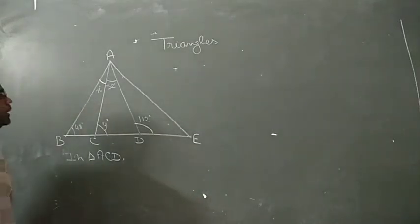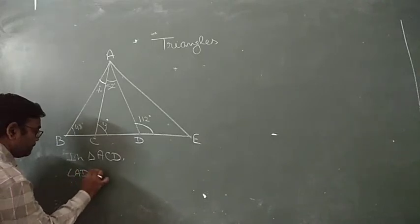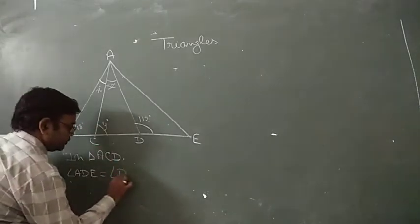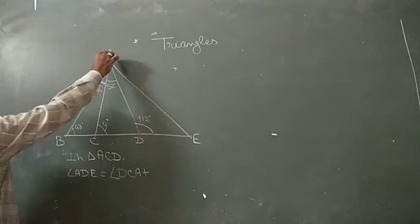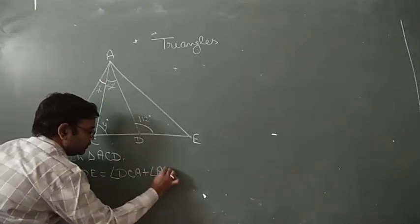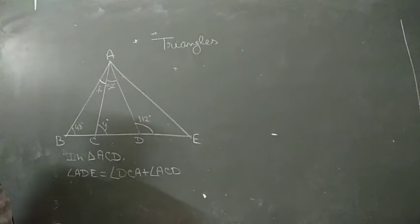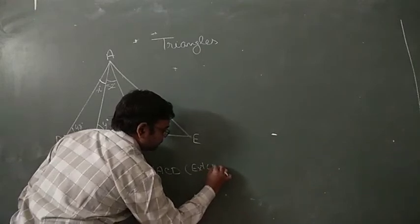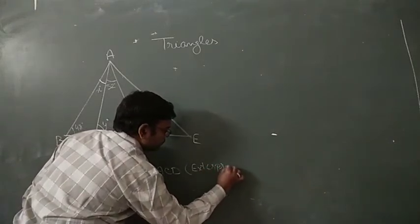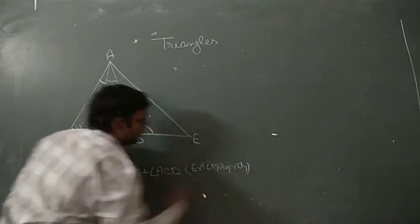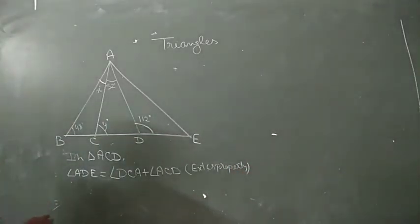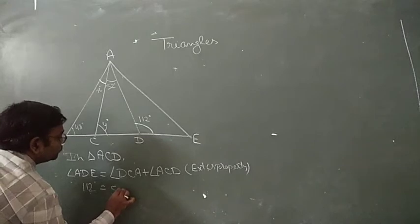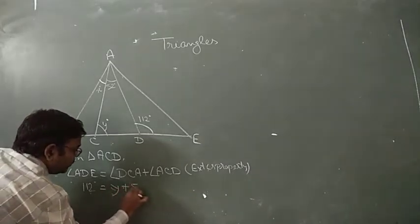We write the statement: angle ADE equals angle DCA plus angle CAD. This is the exterior angle property. The value of ADE is 112 degrees, which equals y plus 52 degrees.